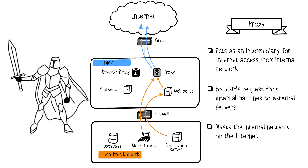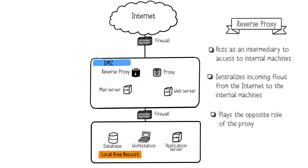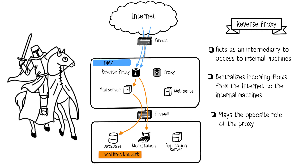Now that we've seen the role of the proxy, let's explore what the reverse proxy is. The reverse proxy plays the opposite role of the proxy — for example, the reverse proxy is the guardian of the castle; anyone wanting to enter must pass through it. The reverse proxy allows an internet user to access internal servers and centralizes and optimizes incoming flows from the internet to internal machines.